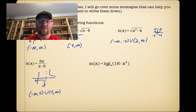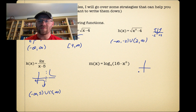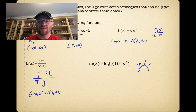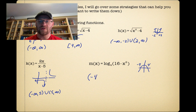For our log function, log base 4 of 16 minus x squared, using sign analysis: this is a parabola that opens downwards with x-intercepts at 4 and negative 4. We can't take the log of a negative number or of zero, so we can't use values outside or at negative 4 and 4. The domain is everything from negative 4 to 4, but it can't include negative 4 or 4, so we use curved brackets: negative 4 to 4 open interval.